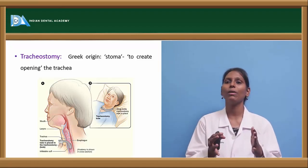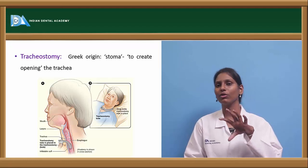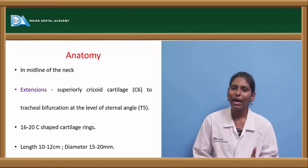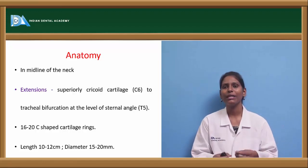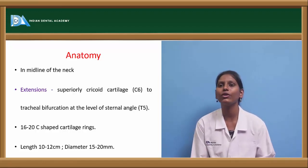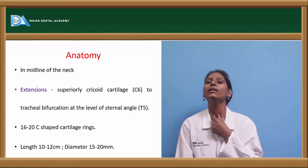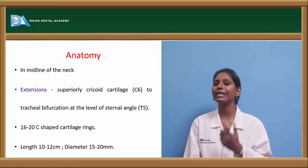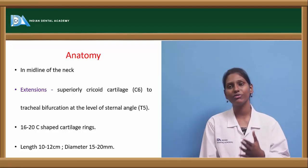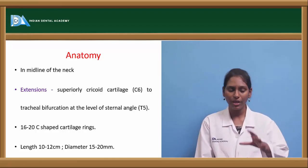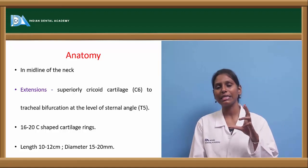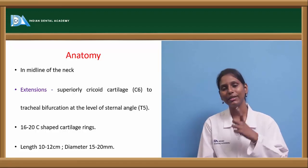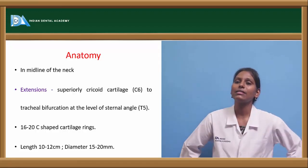Tracheostomy is a Greek word where 'stoma' means to create an opening — stoma means mouth. So you create an opening in the trachea, that is tracheostomy. Before going into tracheostomy, let's briefly cover anatomy. Normally the trachea is present in the midline of the neck, extending from the superior thyroid cartilage at C6 to the tracheal bifurcation at the level of the sternal angle at T5. C-shaped cartilage rings are present in the trachea.